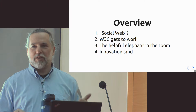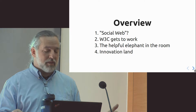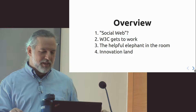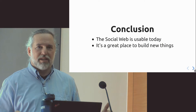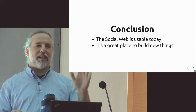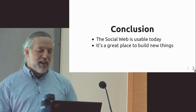So overview of what I'm going to talk about: a little bit about what the social web is, what the term means, what W3C did in this space over the last almost 10 years, tell a little story about an elephant, and then give a bunch of ideas for innovative things that I think people can do in this space that are pretty exciting. The conclusion is going to be that the social web is absolutely usable today, and that it's a great place to build new things.